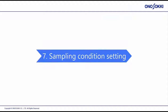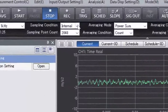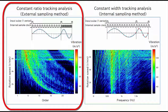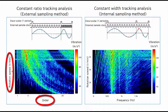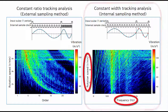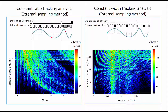Section 7: Sampling Condition Setting. Select the sampling method from Sampling Condition. Select External to perform a constant ratio tracking analysis using an external sampling method — in this graph, the horizontal axis is the order, the vertical axis is the rotation speed, and the shade of color shows the magnitude of the vibration. Select Internal to perform a constant width tracking analysis using the internal sampling method — in this graph, the horizontal axis is frequency, the vertical axis is rotation speed, and the shade of color shows the magnitude of the vibration.